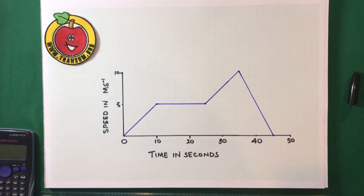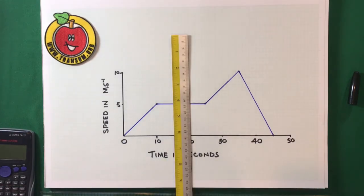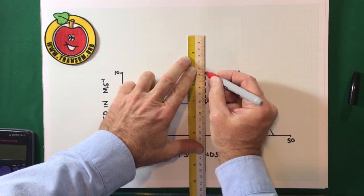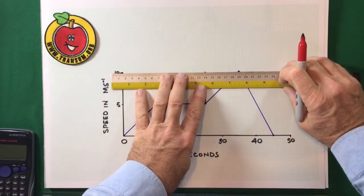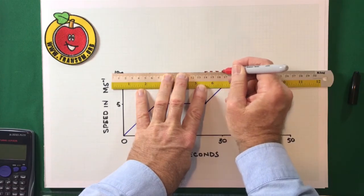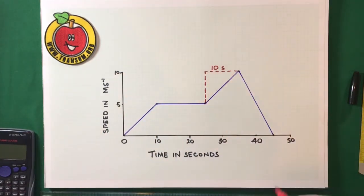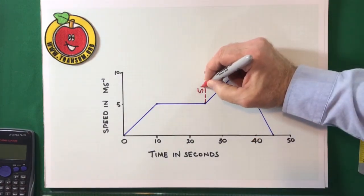So, the acceleration, remember, is the gradient in this case. So, what would be her acceleration for the second section of speeding up? Well, I've got to work out the gradient. So, again, it's rise over run. The run is 10 seconds and the rise is 5 meters per second.